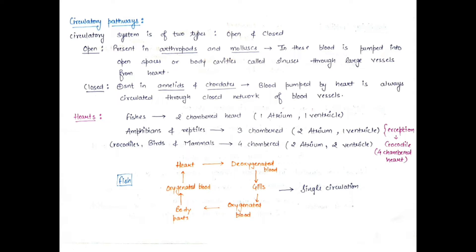The circulatory system can be two types on the basis of whether the blood is directly or indirectly in contact with tissues. The open circulatory system is present in arthropods. Here the blood is filled into body cavities — when the heart pumps, blood fills open spaces and body cavities, so tissues are in direct contact with blood.